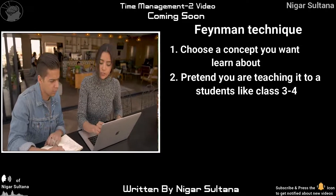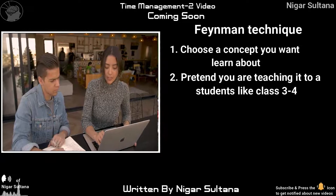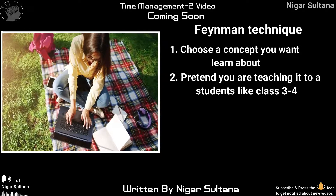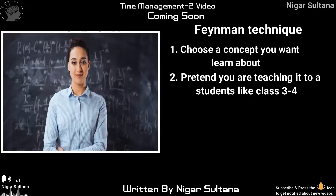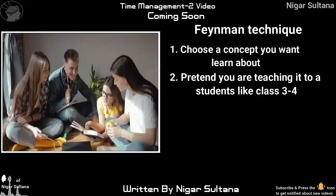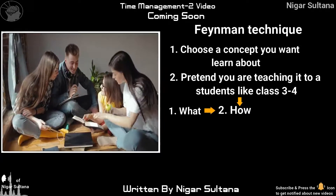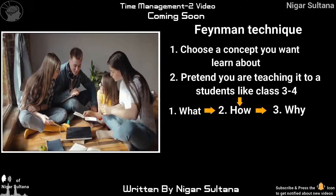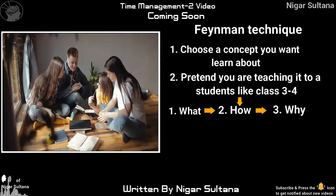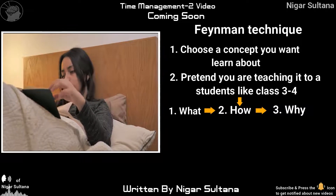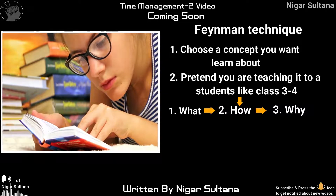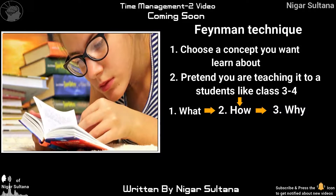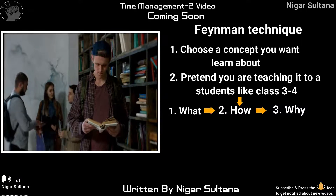Step 2: Pretend you are teaching it to a class 3 or 4 student. Explain whatever you have learned in very short, simple words that a young student could understand. For each sub-topic, put three arrows for: 1. What? 2. How? 3. Why? Write out all your sub-topic details in a very easy and simple way.